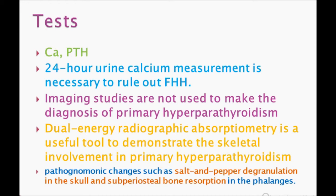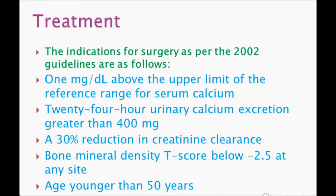Regarding treatment: surgery is indicated based on specific criteria. The criteria include: serum calcium 1 mg/dL above the upper limit of the normal reference range (e.g., if 10.5 is normal, then 11.5 or 12 is an indication); 24-hour urine calcium excretion greater than 400 mg; a 30% reduction in creatinine clearance; bone mineral density T-score below minus 2.5 at any site; and age younger than 50 years, as younger patients are better candidates for surgery.